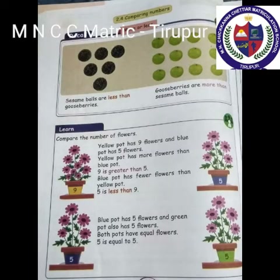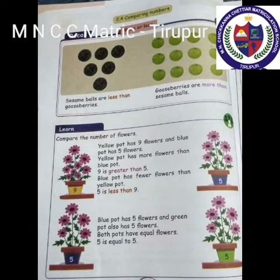Comparing numbers — more or less. Let's see the picture. First: seasoning balls. Second: gooseberries. Count the seasoning balls: 1, 2, 3, 4, 5, 6. Count the gooseberries — there are 12 gooseberries. Therefore, the seasoning balls are less than the gooseberries, and gooseberries are more than the seasoning balls.